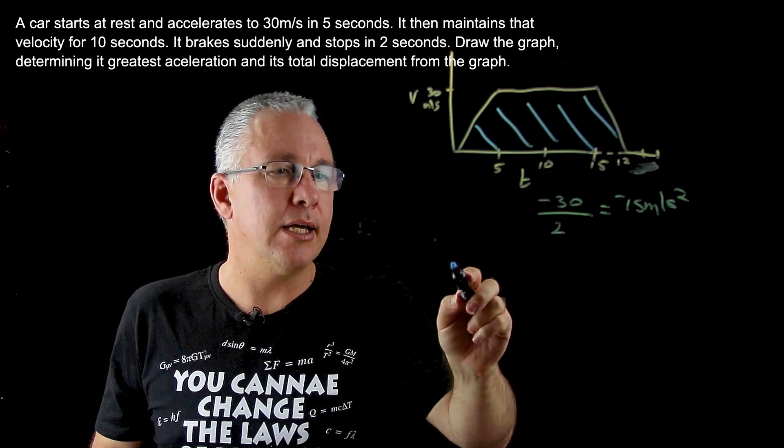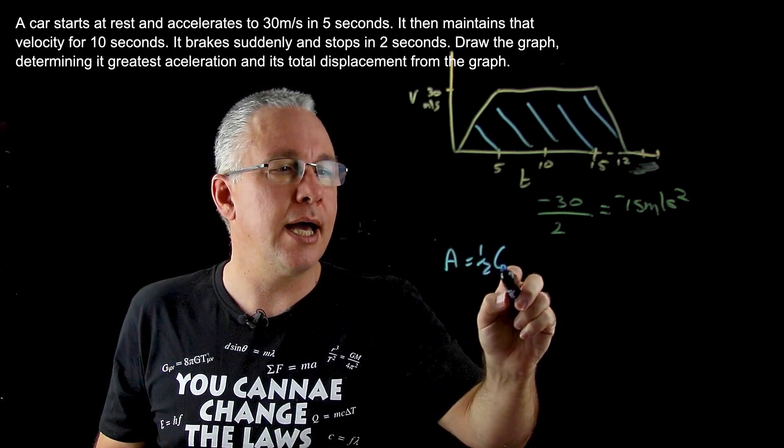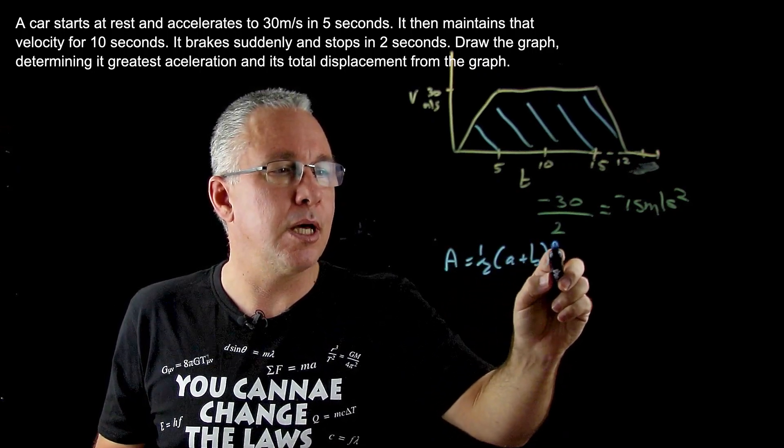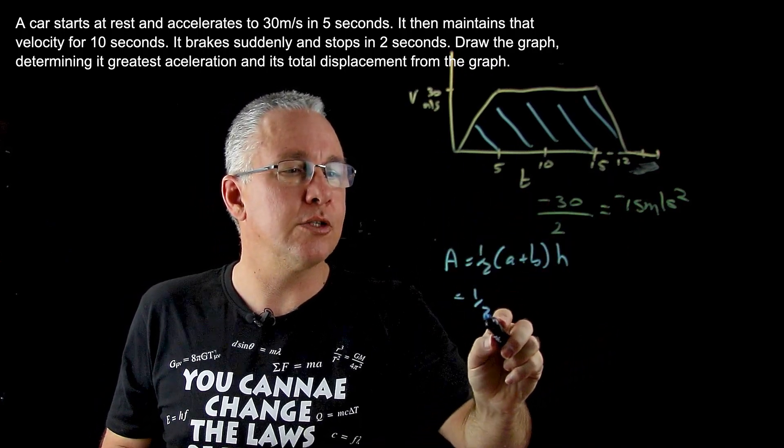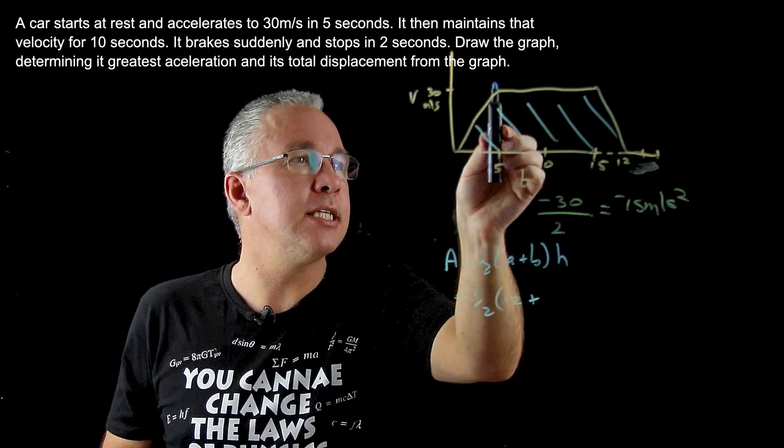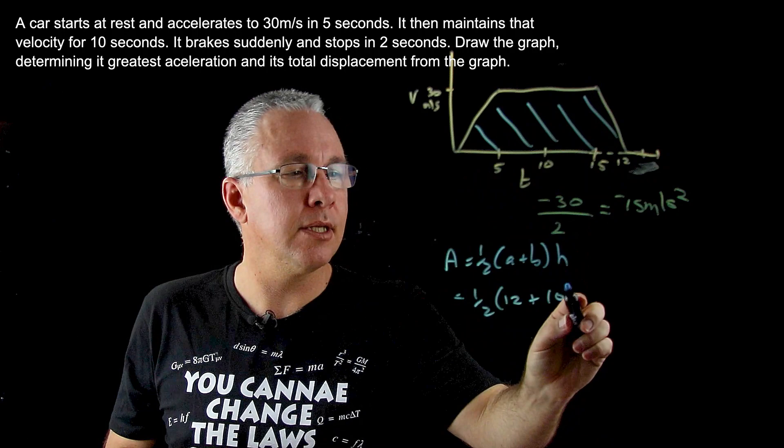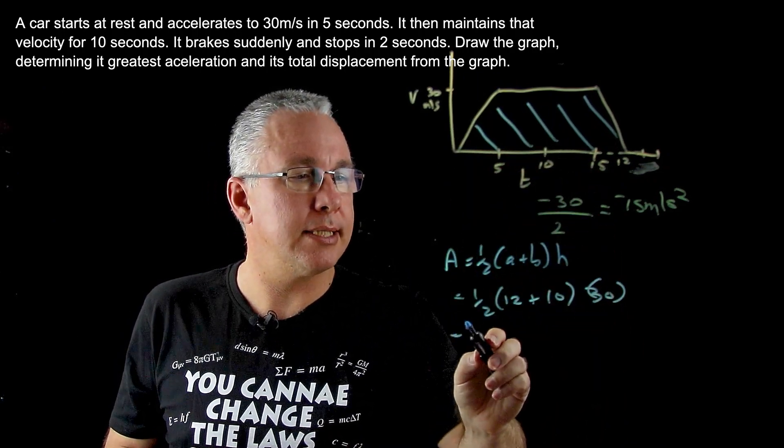The trapezium area is equal to a half times (a plus b) multiplied by h. From our perspective, this is 12, this here is 10, and the height here is 30. So there's our mathematics.